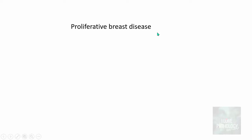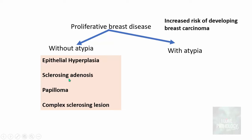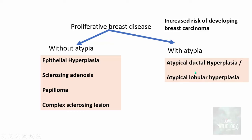Why is it important to know about proliferative breast disease? Because there is always an increased risk of developing breast carcinoma whenever you encounter a proliferative breast disease. It is classified into proliferative breast disease without atypia or with atypia. Lesions without atypia include epithelial hyperplasia, sclerosing adenosis, papilloma, and complex sclerosing lesion. Whereas atypical ductal or atypical lobular hyperplasia is included in proliferative breast disease with atypia.